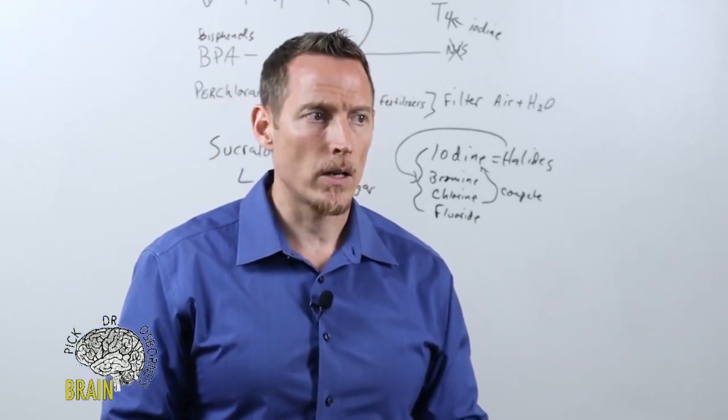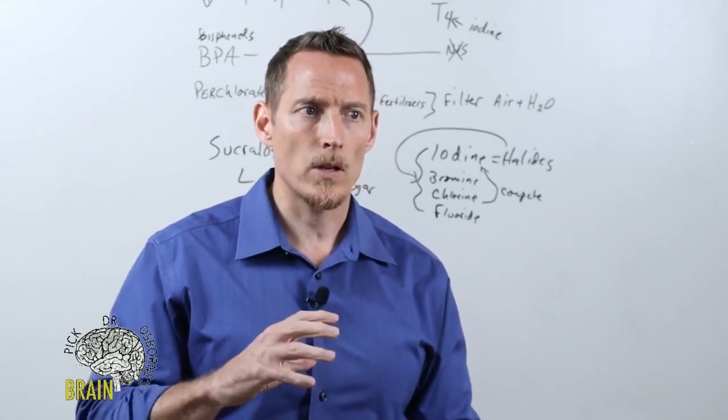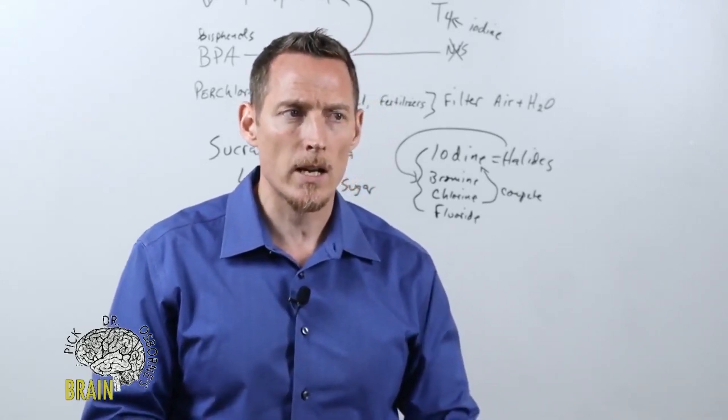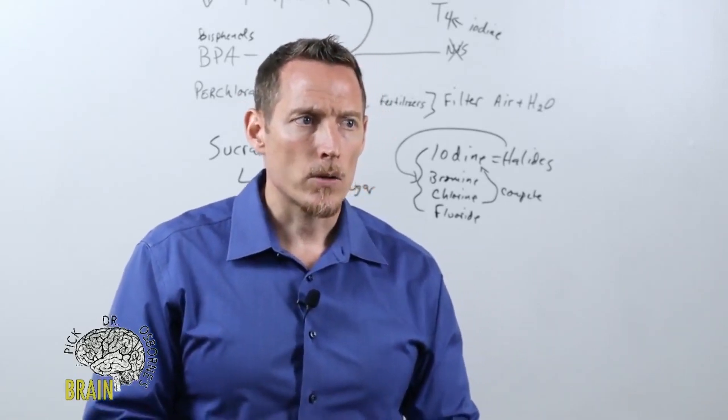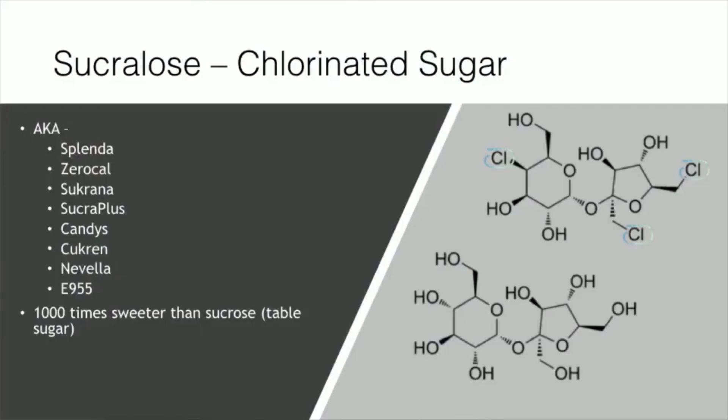Let's throw up the next slide here on the sucralose itself. You can see what you're looking at in this slide—on the top versus the bottom, you're looking at sugar versus chlorinated sugar or sucralose. What you can see on that molecule is this: sucralose substitutes a couple of chlorine molecules for hydroxyl molecules, and that's what makes it different. It's supposed to create a scenario where you can't absorb the sugar so it becomes calorie-free.